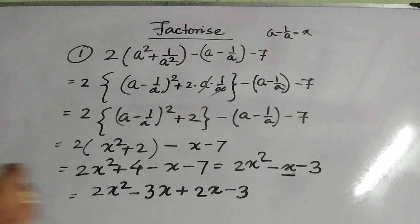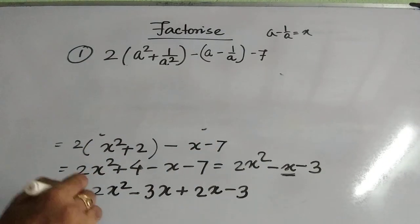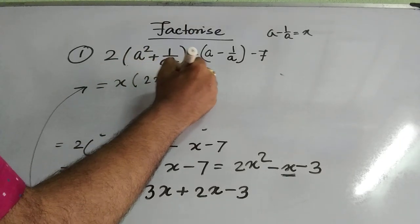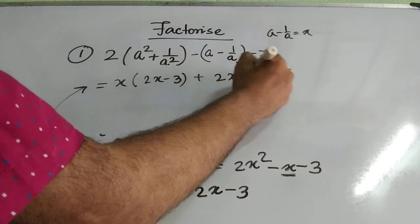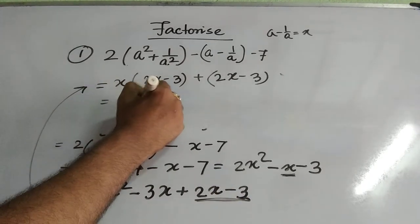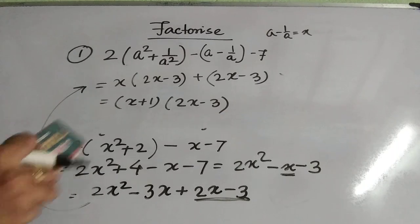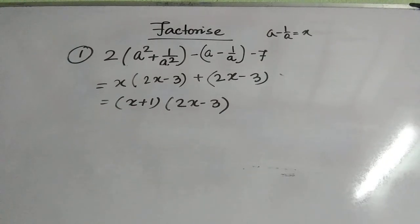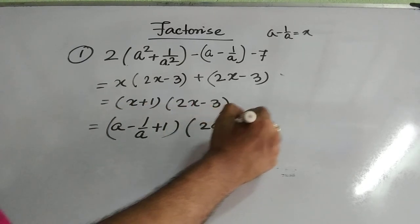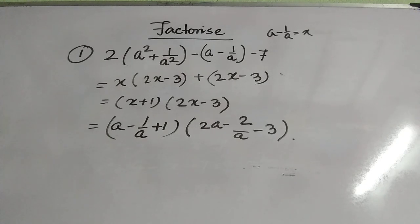Taking x common from the first two terms gives x·(2x - 3), and taking 1 common from the third and fourth gives 1·(2x - 3). So the factorization is (x + 1)·(2x - 3). Back-substituting x = a - 1/a gives the final answer: (a - 1/a + 1)·(2a - 2/a - 3).